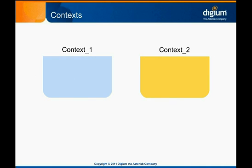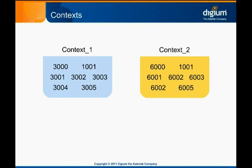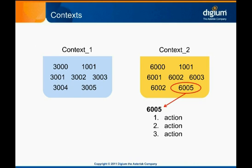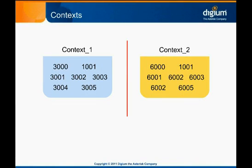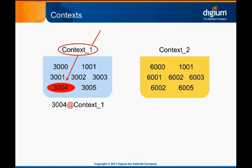Contexts are the top-level organizational unit within a dial plan. The typical dial plan has several different contexts, and each one of them contains extensions. An extension is a named set of actions that Asterisk will perform when that extension is dialed. You can think of a context as a container for an extension, and each extension as a list of things Asterisk will do when a call is connected to that extension. Each context is distinct, so the extensions in one context are completely separate from extensions in another context. When dialing in Asterisk, you're actually indicating the extension and context to which you wish to connect.